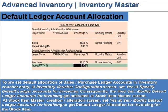At the stock item master creation or alteration screen, set 'Yes' at 'Set modified default ledger accounts for invoicing' to get default ledger allocation for invoicing for the stock item.